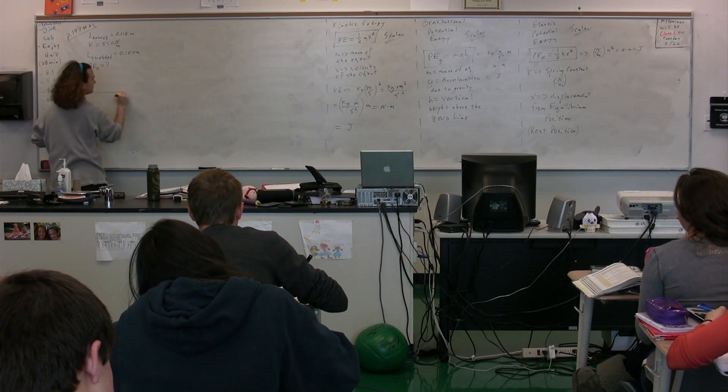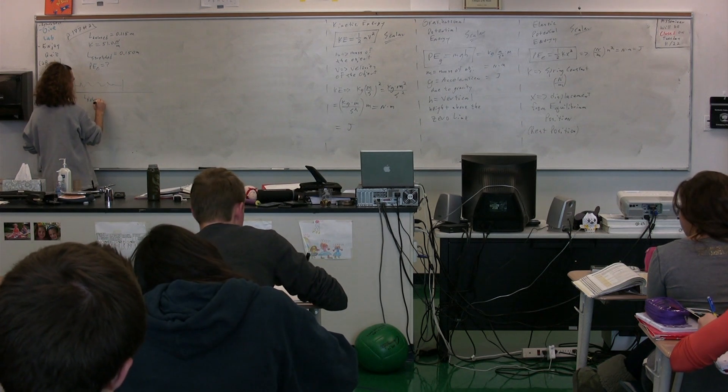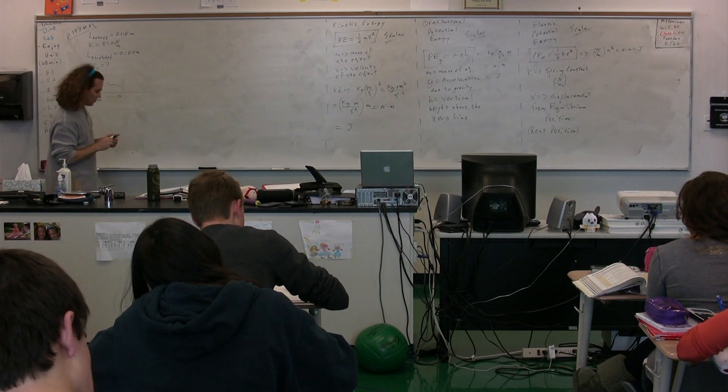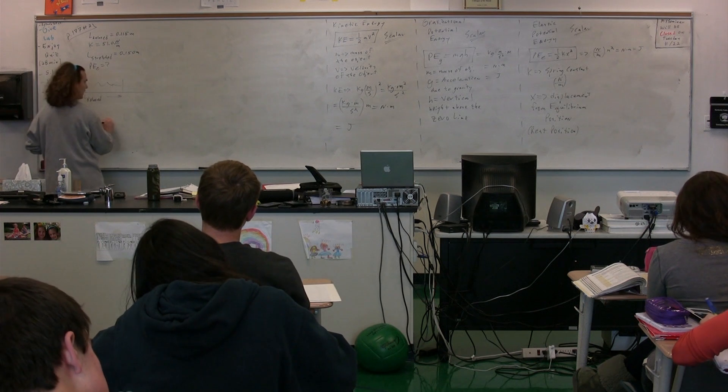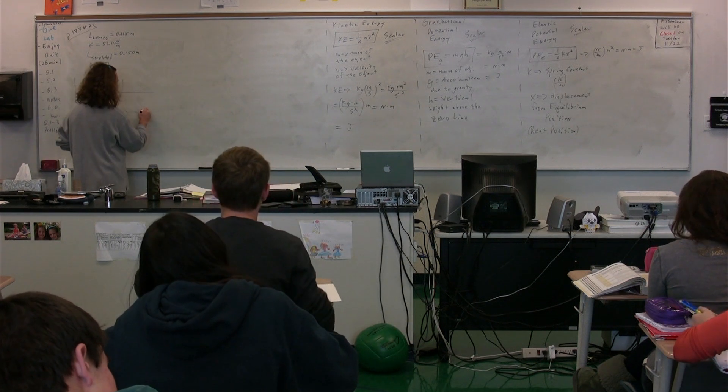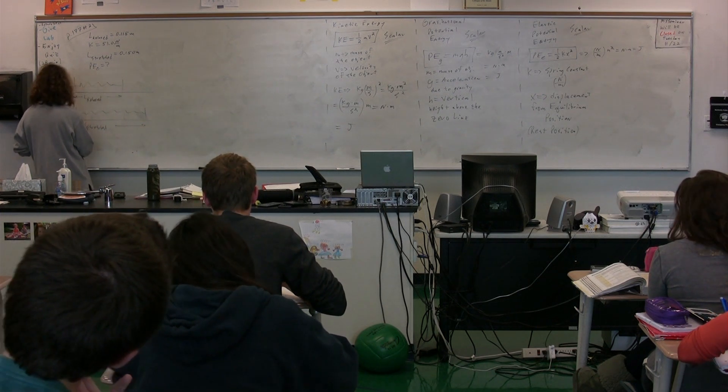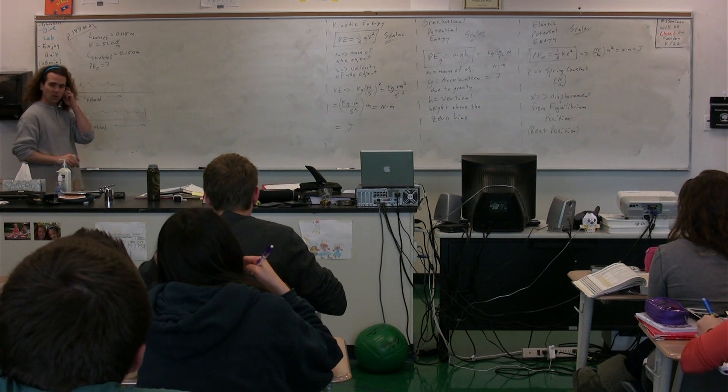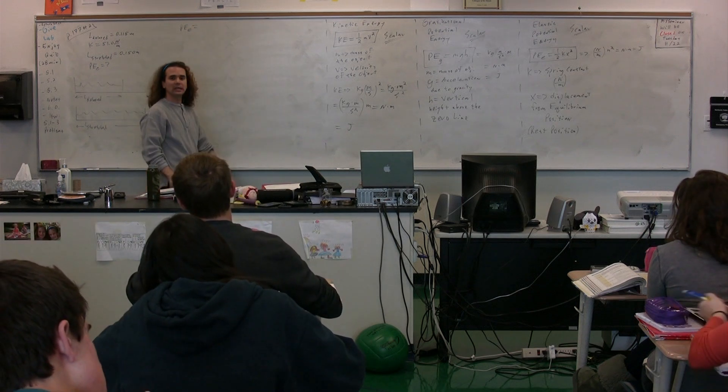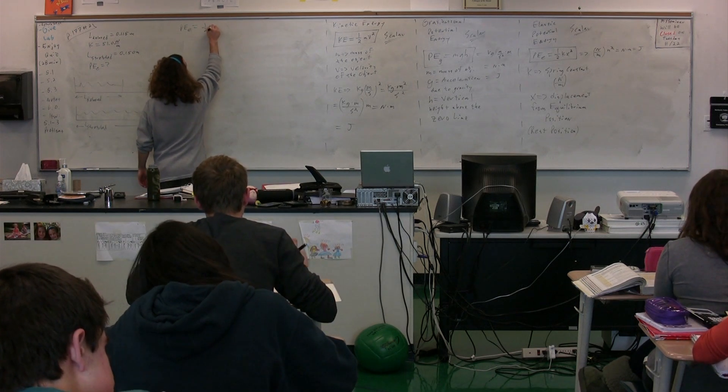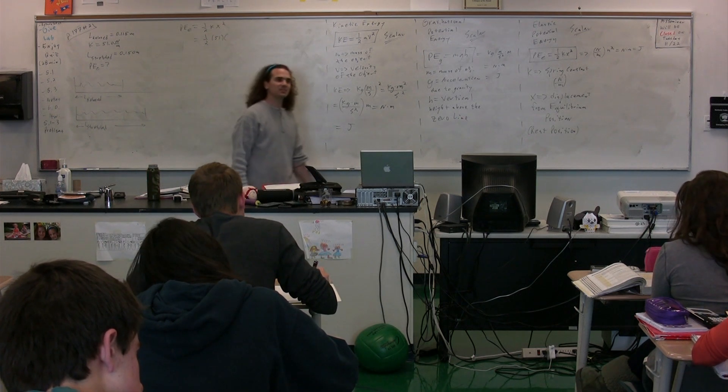So, we have a spring. Originally, before we do anything to it, it has a certain relaxed length, which is 0.115 meters. We're then going to expand that spring, we're going to pull on it, and it's going to have a new length, a length when it's stretched, which has a value of 0.150 meters. We know the spring constant of the spring, and all they're asking is, what is the elastic potential energy stored in the spring? The equation is one-half kx squared. We have the spring constant, it's 51, so what we need is the x.